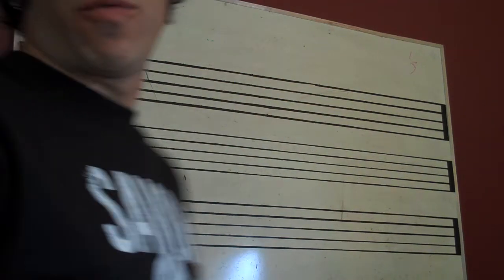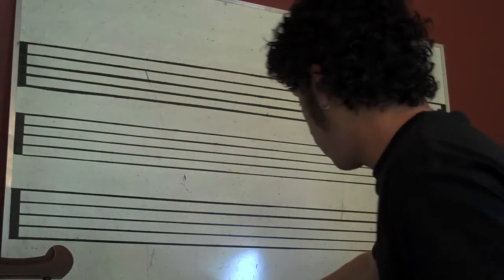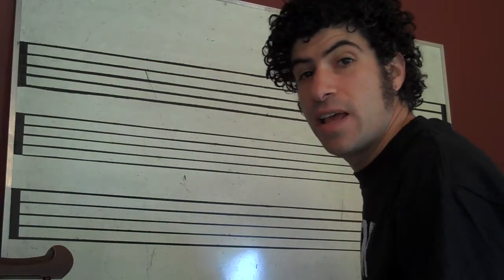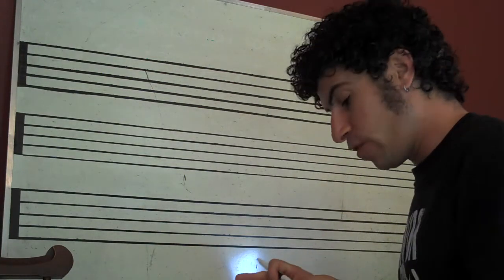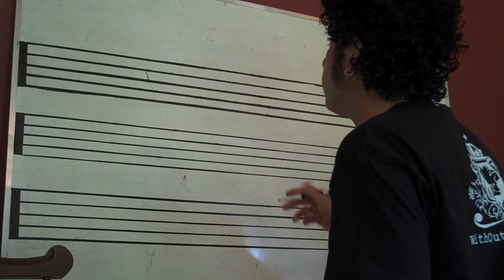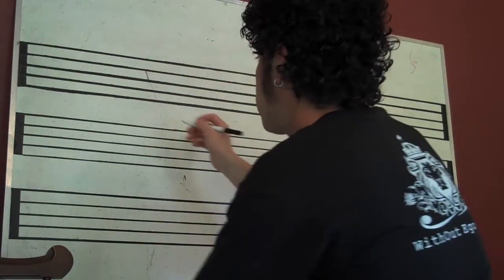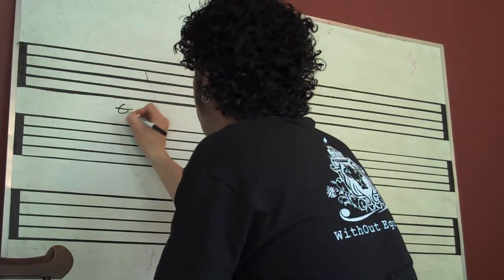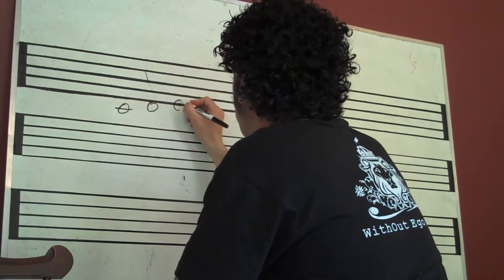Today we're talking about the 2-5-1 progression. This is a real common jazz progression and maybe you've heard of it before. So we're going to start out with our good old friend C major scale again.